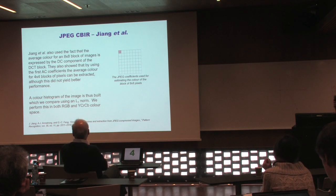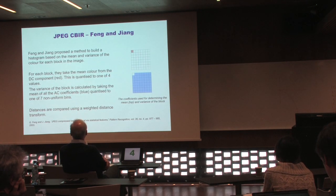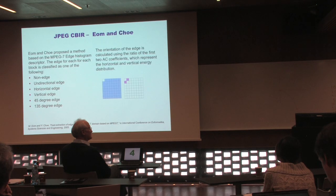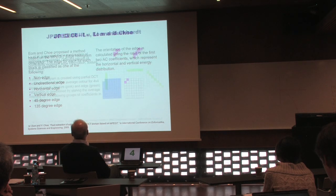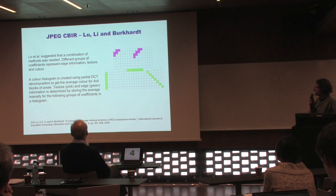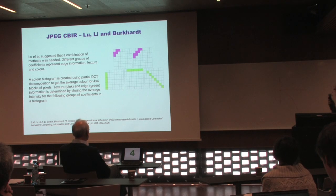Jiang's group at Glamorgan also performed JPEG retrieval based on color histograms, and additionally extracted mean and variance from DC and AC terms. It is also possible to derive an equivalent of the MPEG-7 edge histogram descriptor from the AC coefficients — determining per block whether there is a horizontal, vertical, or ±45-degree edge, then building a histogram. Lou and colleagues combine a color histogram with edge and texture information extracted from other DCT coefficients.